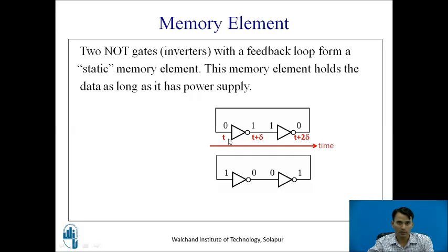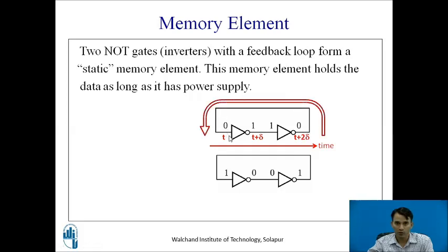As an example, when 0 is given as input to the first NOT gate at time t, it produces output 1 at time t plus delta. This output is given as input to the second NOT gate, which produces output 0 at time t plus 2 delta. This 0 is fed back to the first NOT gate, so 0 is converted to 1, and 1 is converted to 0, which loops back — so 0 gets stored.